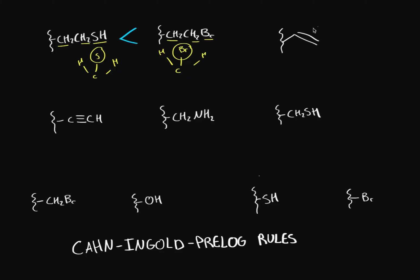Now what about this one — this is an alkene. The first carbon on the single-bond group has H, H, and another carbon. But on the alkene, we have H and a carbon with a double bond. If you have a double bond carbon, it's as if you have an extra carbon. So instead of H, H, and one carbon, you get H, one carbon, and an extra carbon — making it larger, so it's ranked higher.